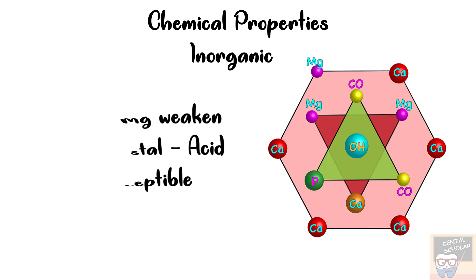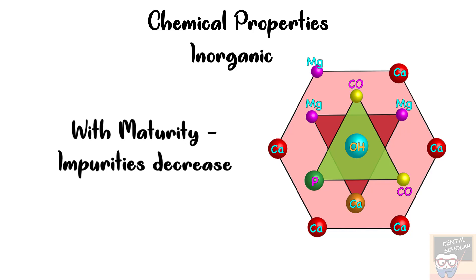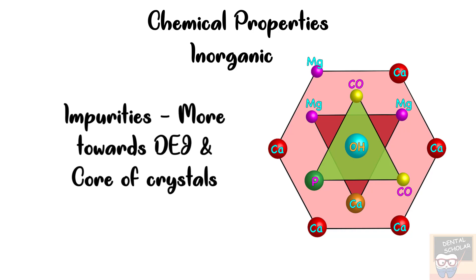As I already said these impurities are more in newly formed crystals. But as the crystal grows or it matures the impurities decrease in concentration. So they are more towards the DEJ or they are more towards the core of the crystal and they are less towards the periphery of the crystal or they are less towards the surface of the enamel.